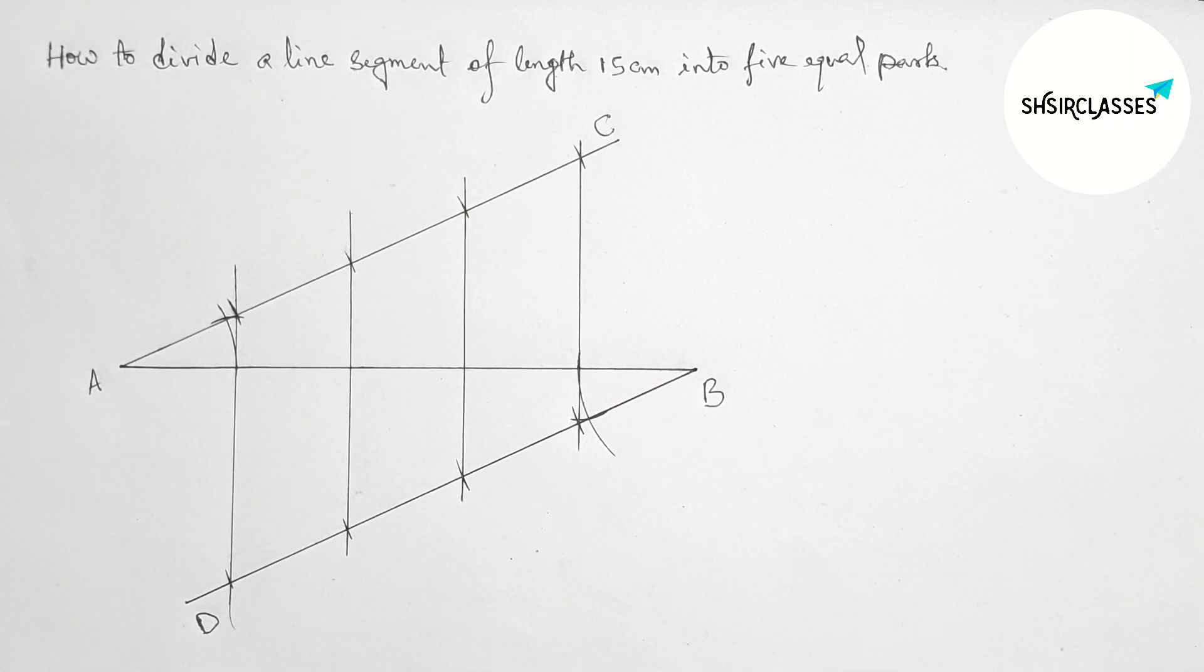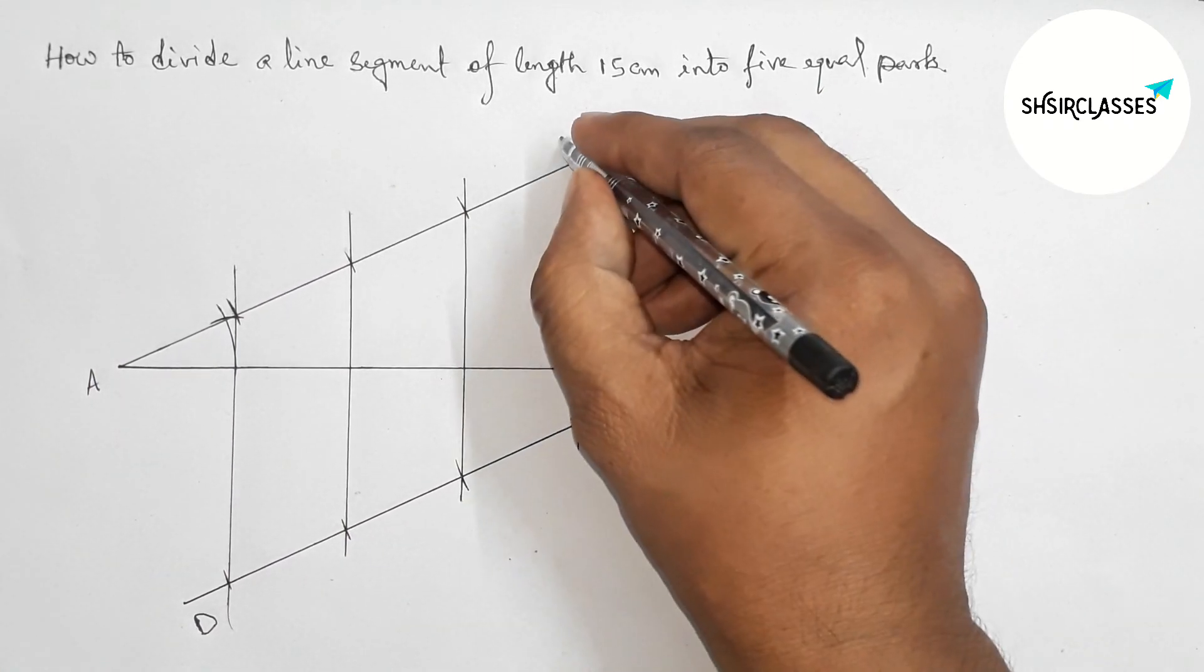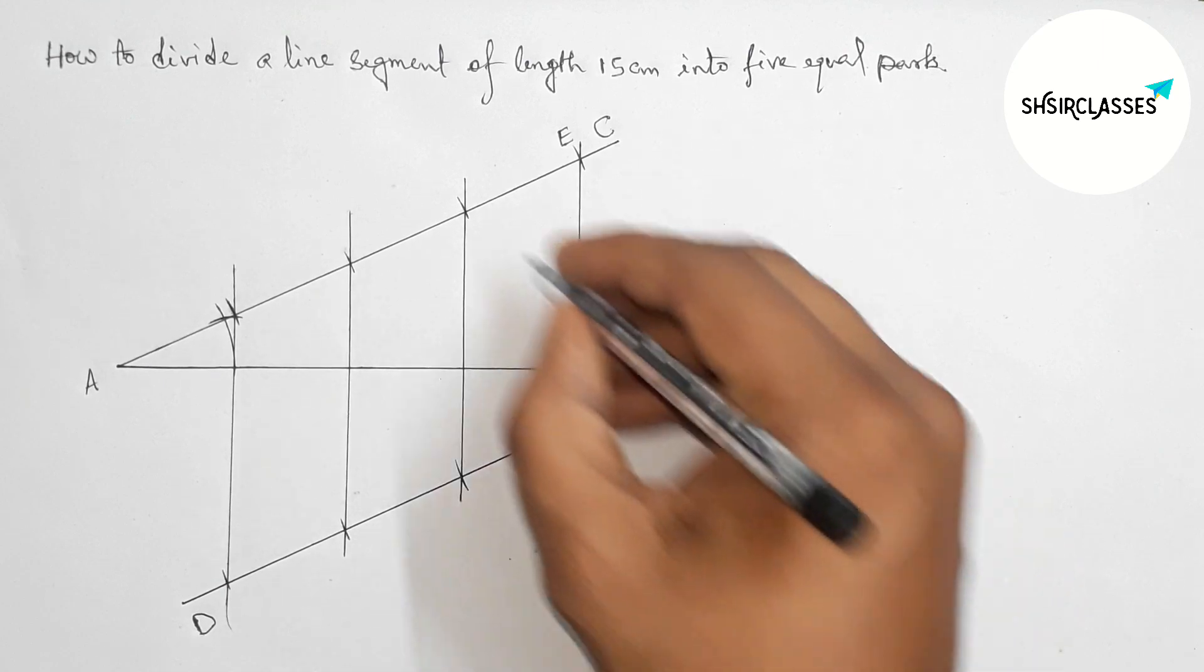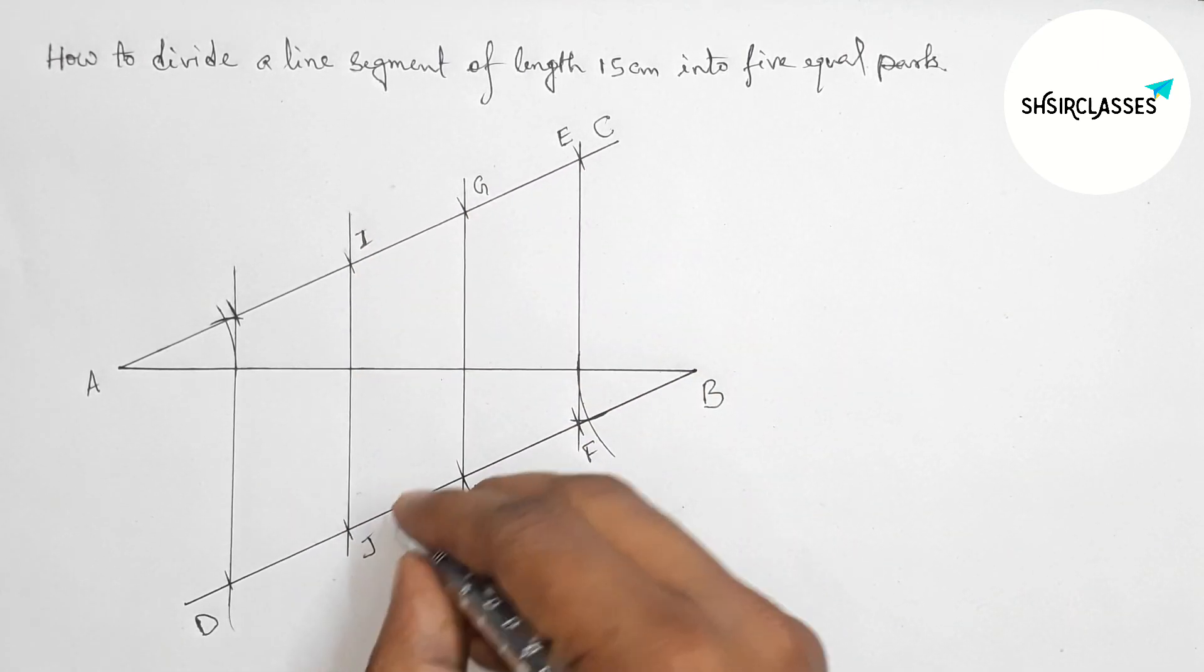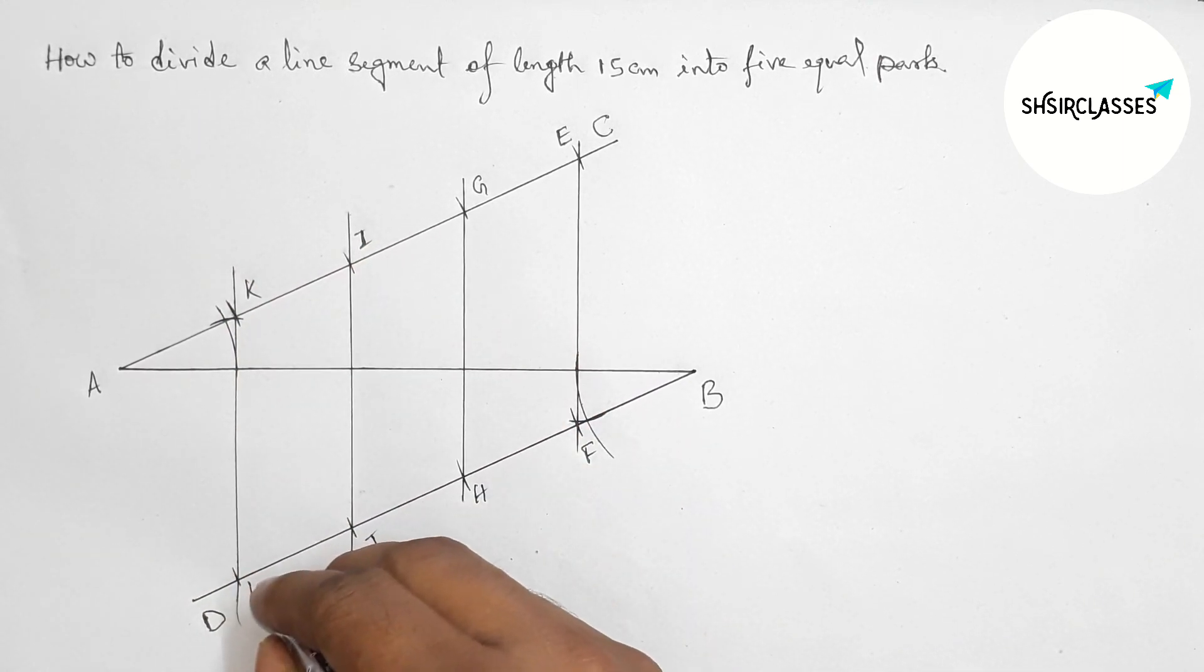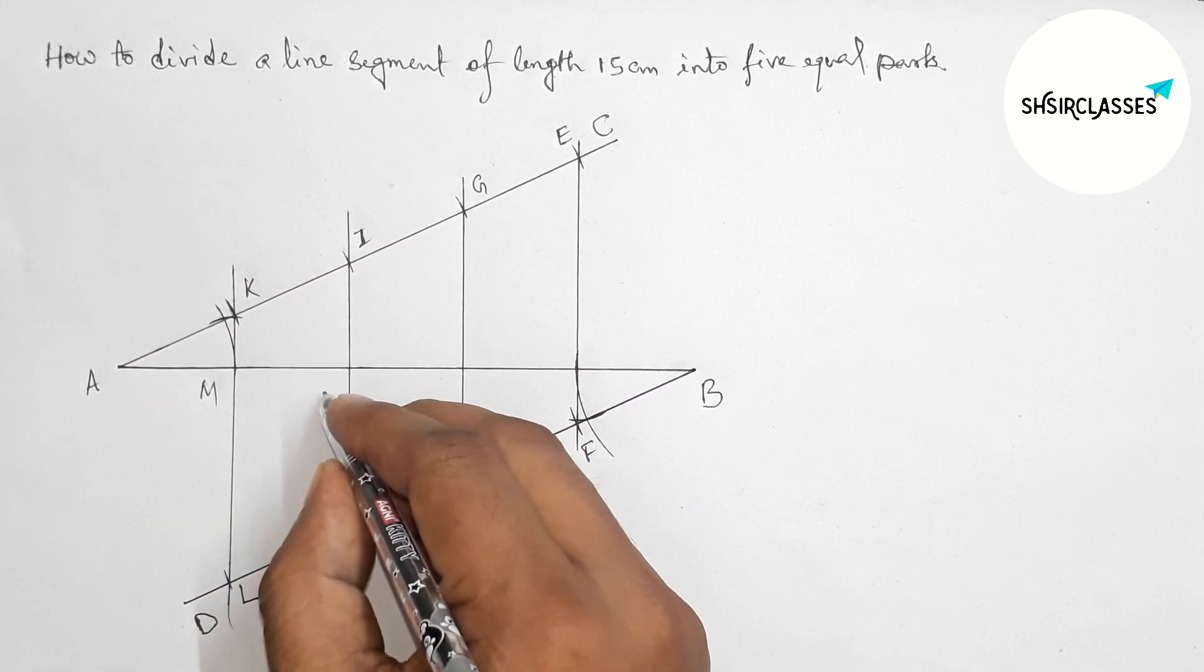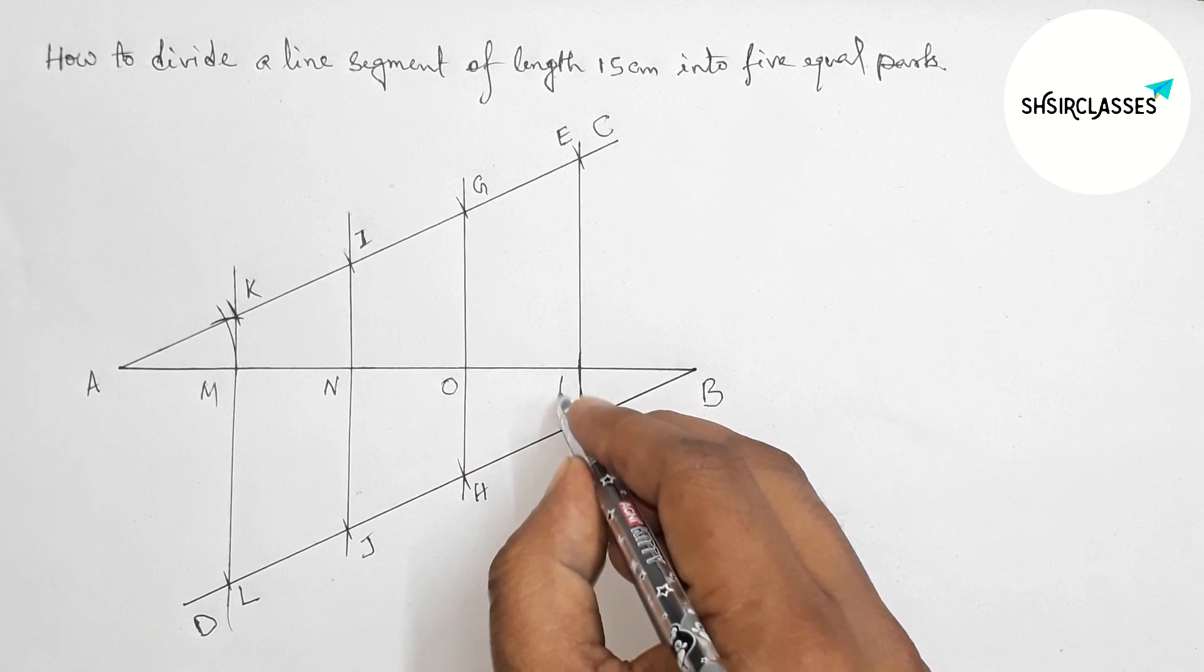Perfect. Now label the points: E, F, G, H, I, J, K, L, and here M, N, O, P.